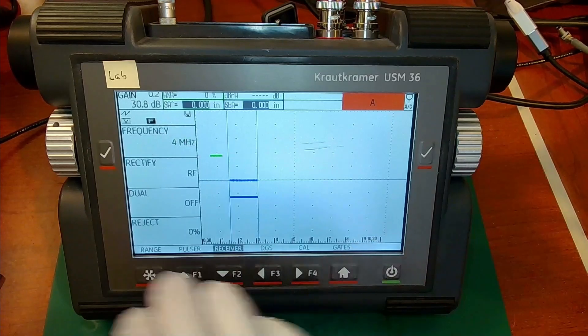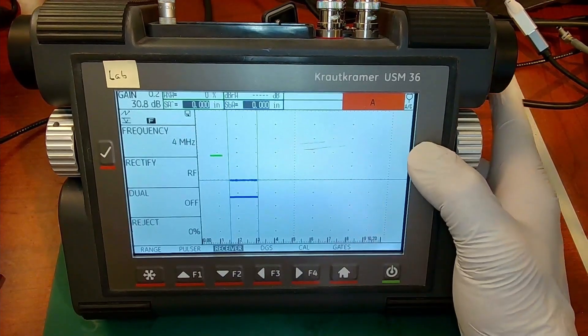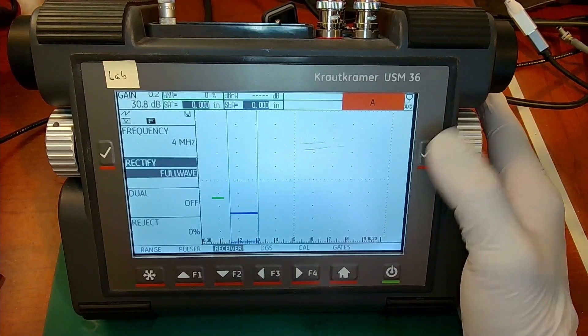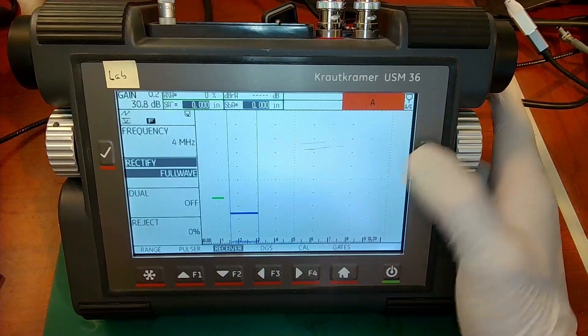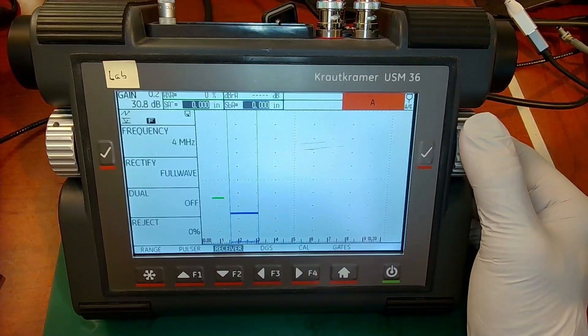So home always takes you home. Check mark is used to select. So let's select receiver menu, go to rectification. Let's go to full wave rectification. And then I can go right back to home, back to my bottom menu.